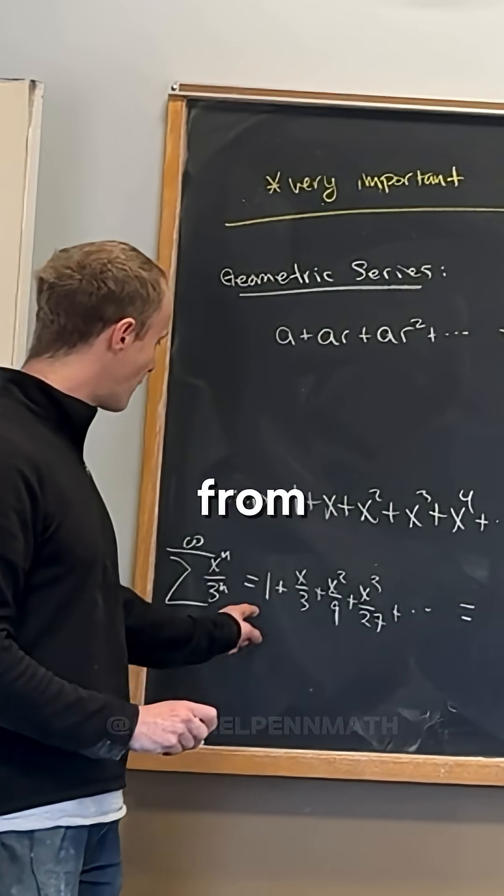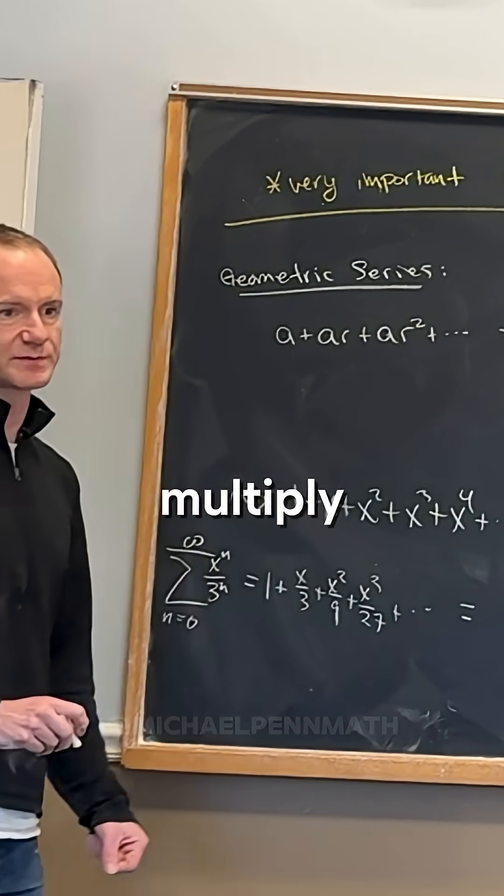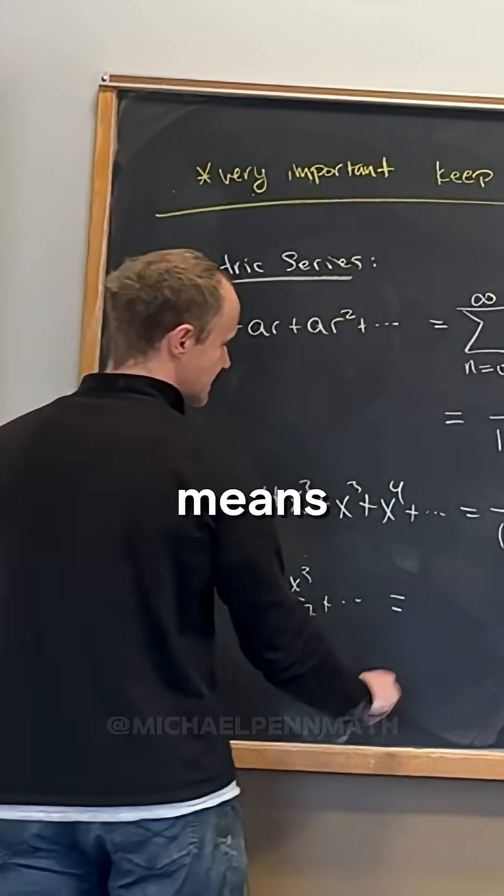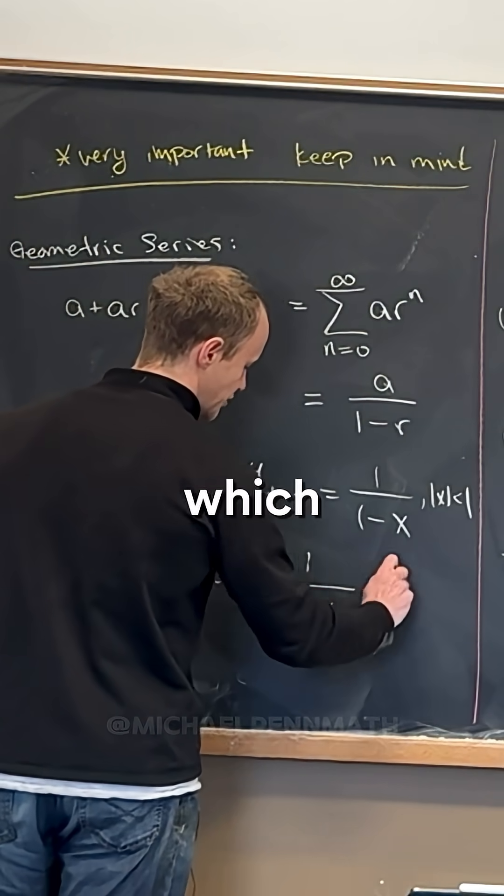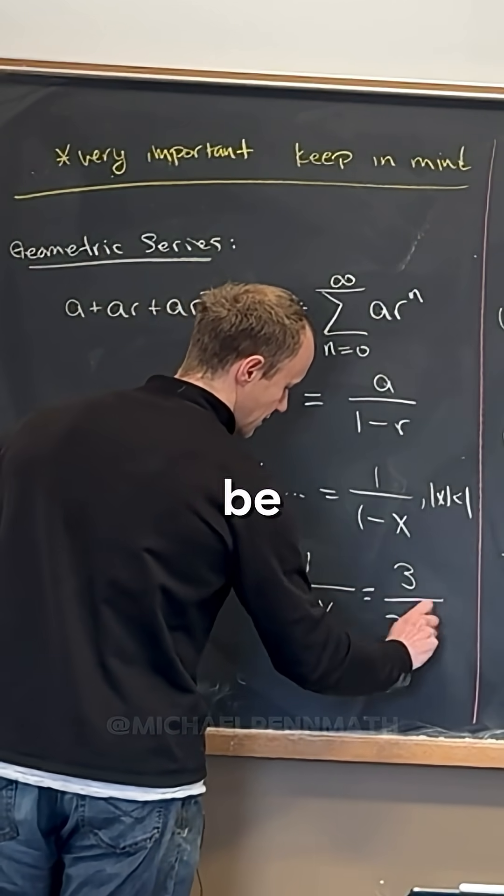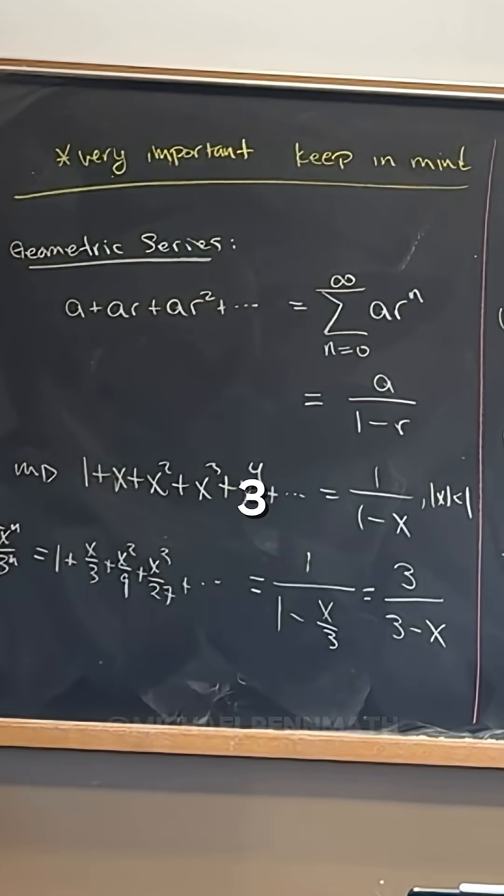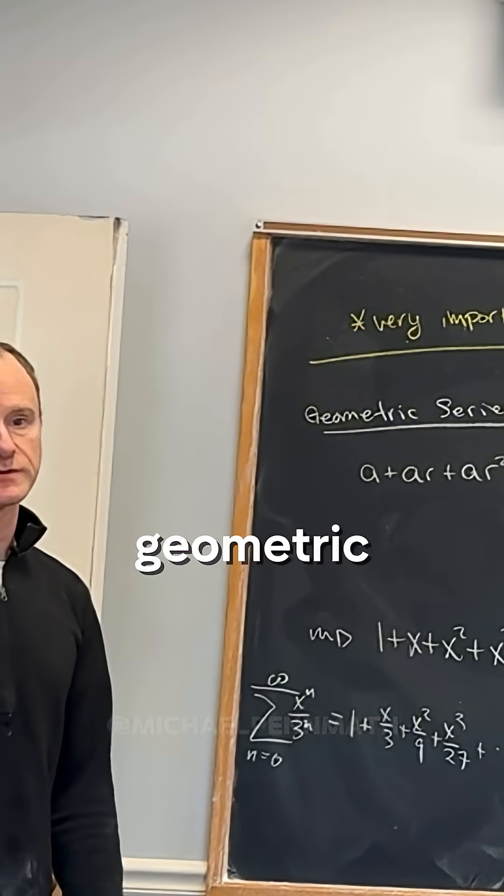So notice that that is this right here, but the common ratio is x/3. Notice to get from one term to the next term, you always multiply by x/3. So that means this sums up to 1/(1 - x/3), which can obviously be simplified to 3/(3-x).